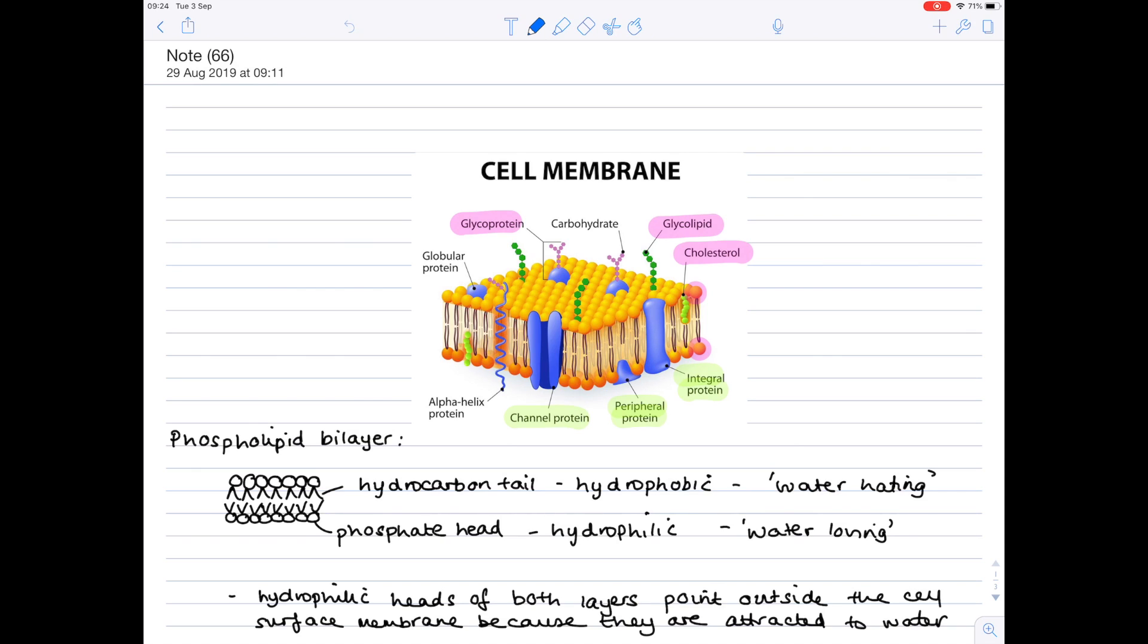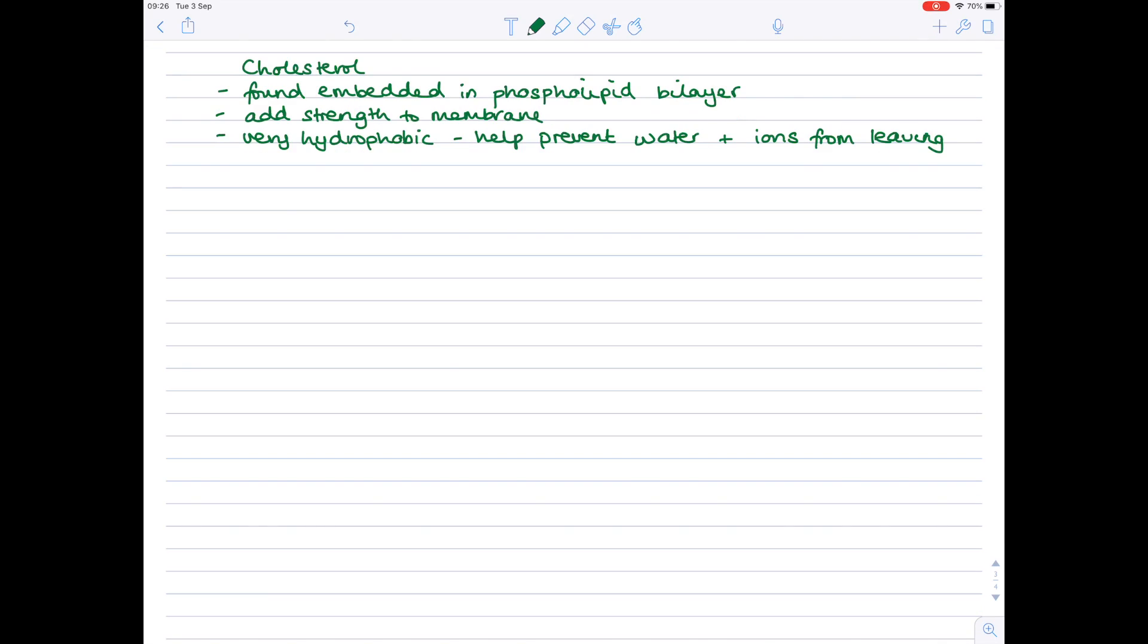The next component of the cell membrane we're going to consider is cholesterol. As you can see, they occur within the phospholipid bilayer. Now, their real role is to add strength and notice that they are very hydrophobic, so they hate water. And, therefore, they help prevent loss of water and, by default, prevent dissolved ions from leaving the cell. So, we'll write a summary now. It's found embedded in the phospholipid bilayer. They're very hydrophobic, so they help prevent water and ions from leaving.